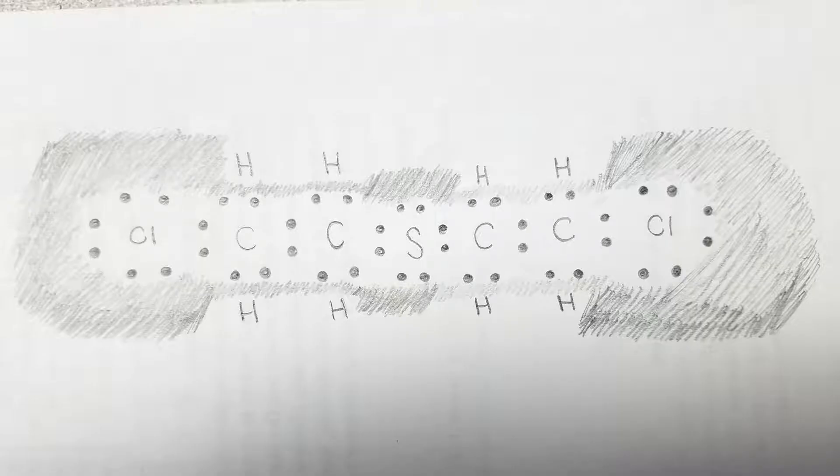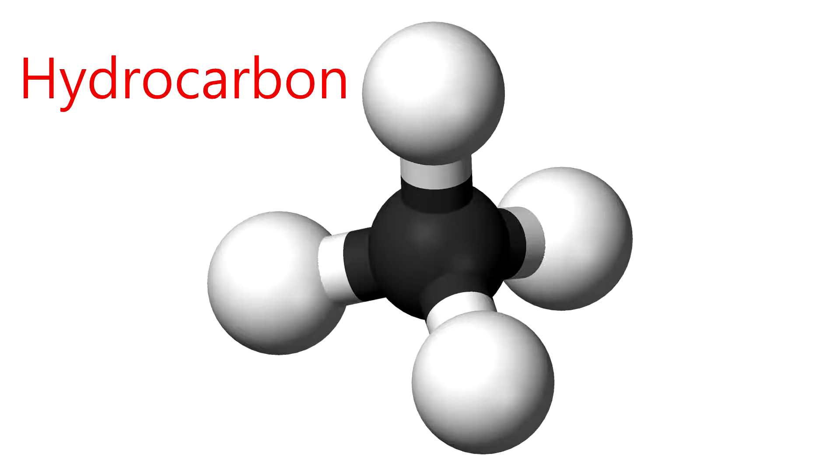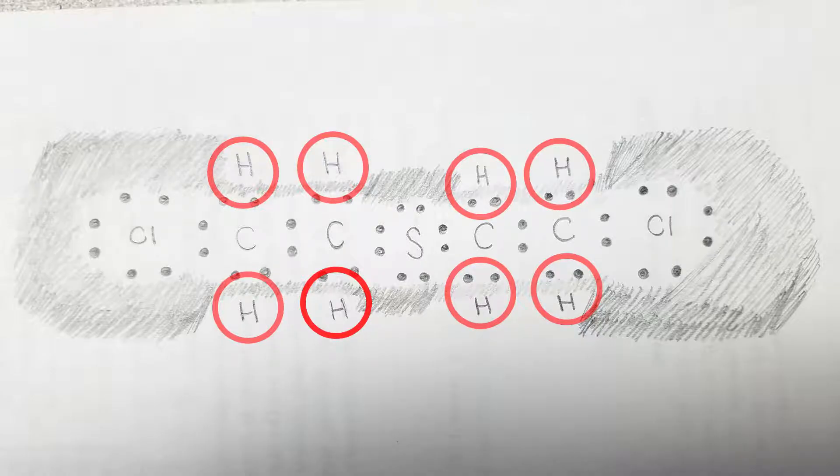Let's begin with the Lewis dot structure. This is the only model out of the three to show electron behavior, which is very important to understand the bonds between atoms. We can get a crude understanding of a molecule's structure as well. It is a symmetrical molecule. The center is one sulfur atom. Connected to that sulfur atom are two hydrocarbons on each side. A hydrocarbon is simply a carbon with hydrogen attached to it. There are two hydrogens attached to each carbon atom.